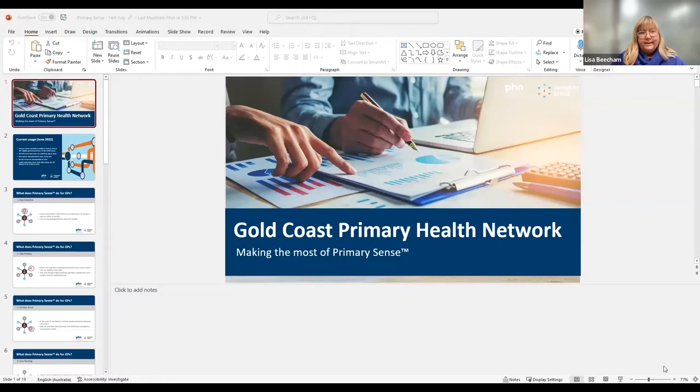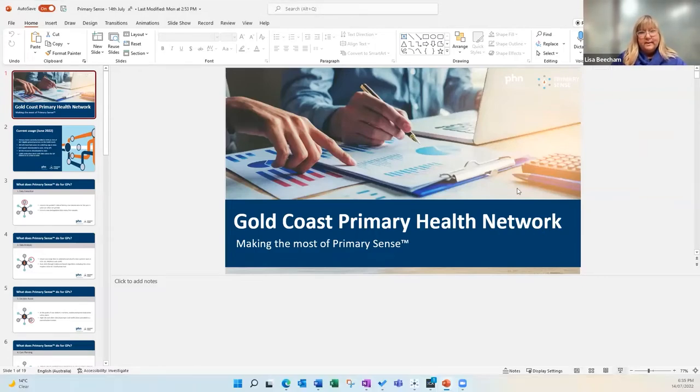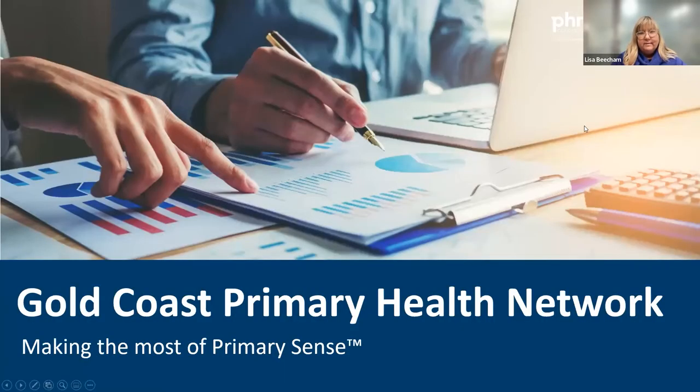Primary Sense uses the evidence base and the background algorithm and architecture of the Johns Hopkins ACG tool, which is used in about 20 countries around the world and has been used for 30 years. That gives us really good evidence background in the coding of diagnoses and the algorithms that help us find our really high-risk patients.